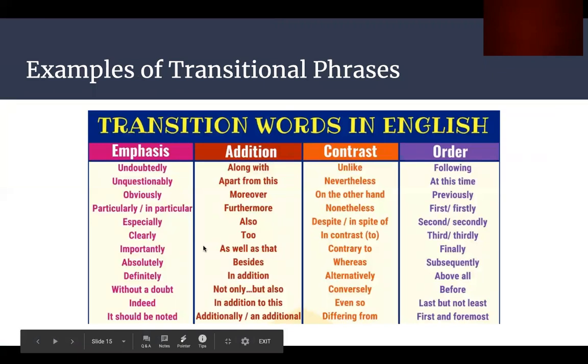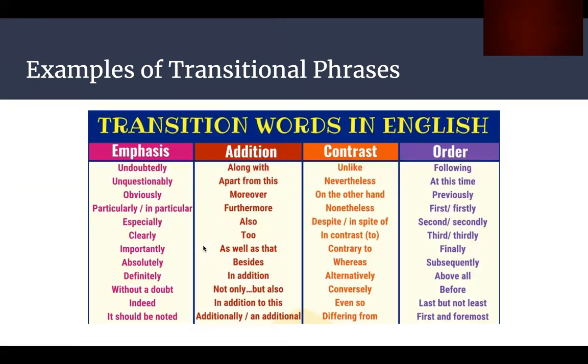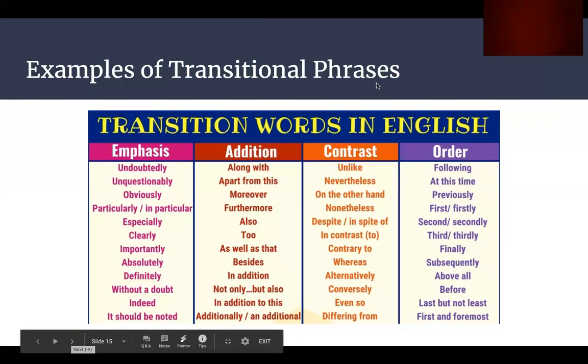Now, let's go over some examples of transitional phrases, as there are a lot of them. For emphasis, we have undoubtedly, unquestionably, obviously, and this is to put weight on the words. In addition, when we want to add another phrase or another clause to explain something, we have as well as, besides, in addition. For contrast, when we explain a clause and compare it with another clause, we have unlike, on the other hand, nevertheless. And if we want to explain things in order, we have the following, previously, at this time. As we can see, there are many examples of transitional phrases.